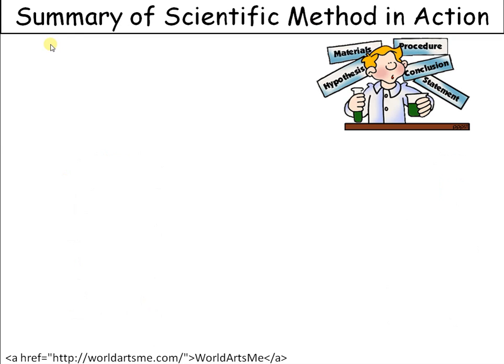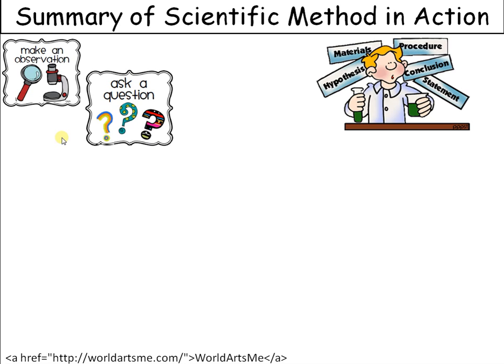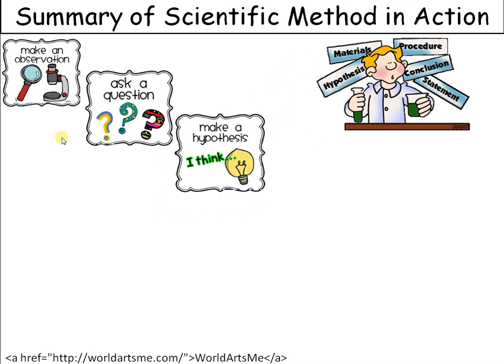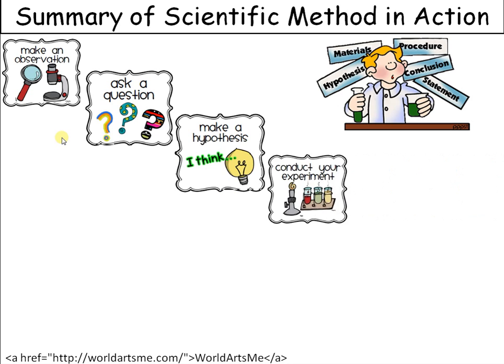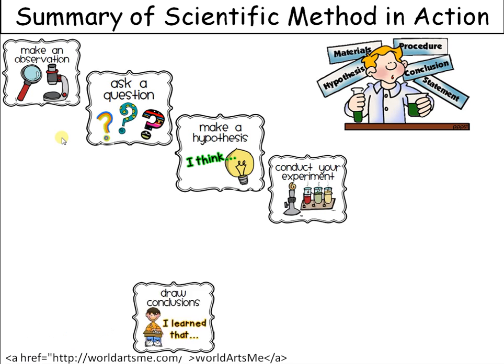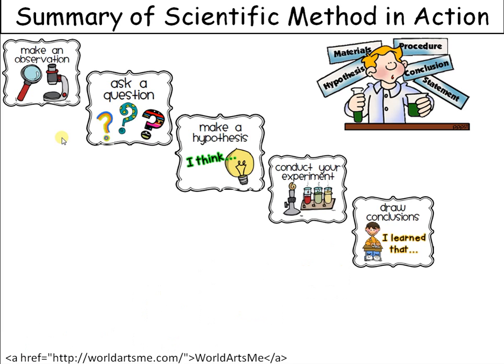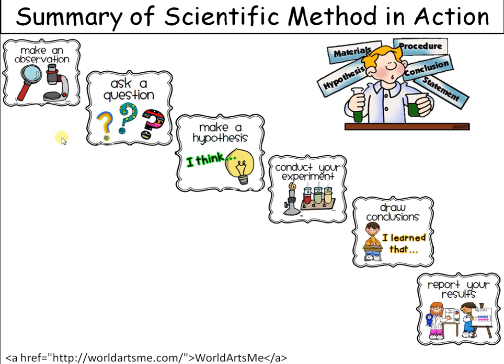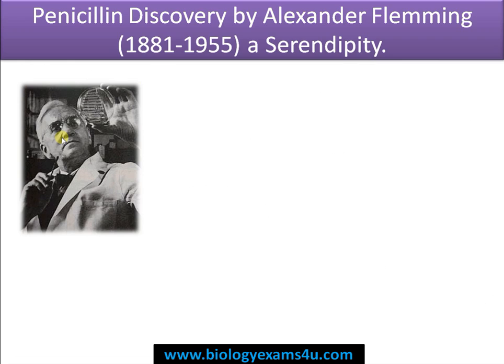Here is the summary of the scientific method. First, it starts with an observation. We may have many questions — why, what, how — so we define the problem by asking a question. Then we formulate a hypothesis and conduct an experiment to test whether the hypothesis is right or wrong. We collect and analyze data, interpret it, and draw conclusions. Finally, we publish the data. We will discuss this in detail using Alexander Fleming's penicillin discovery.